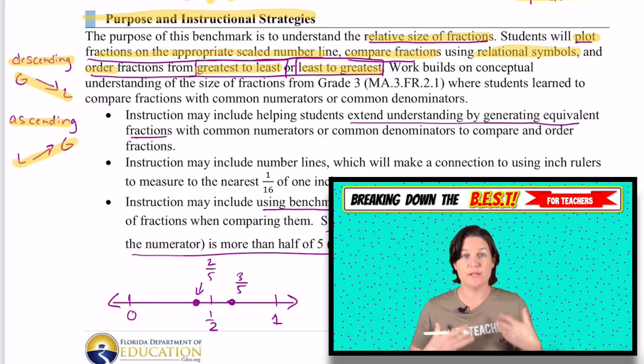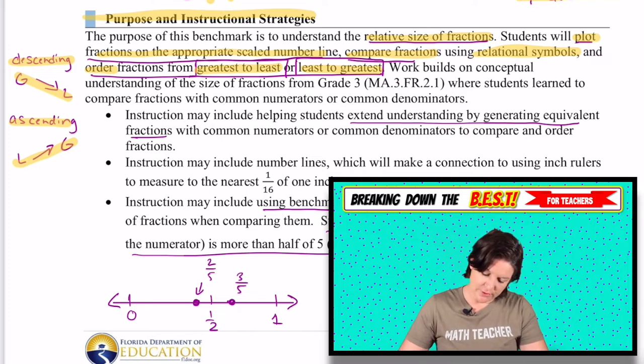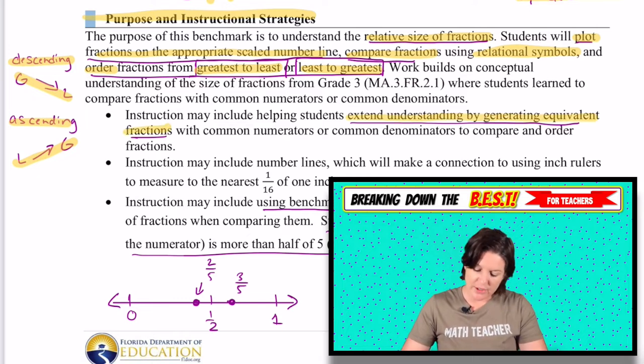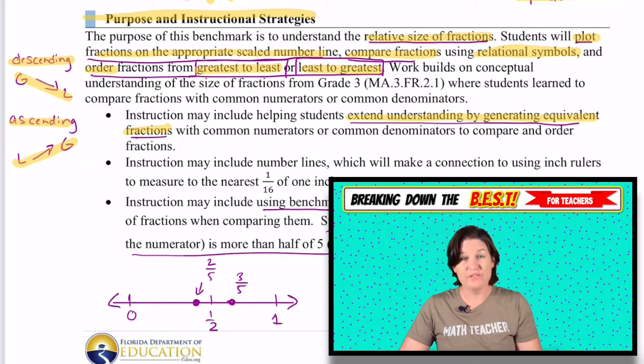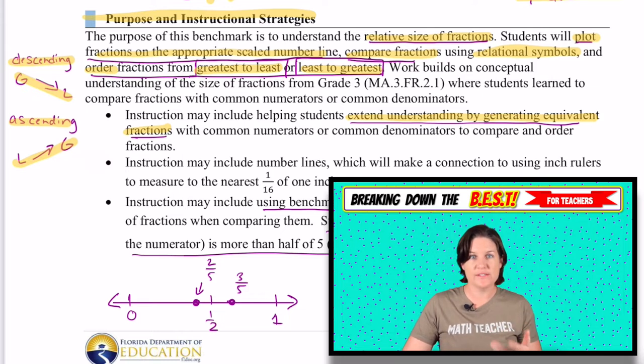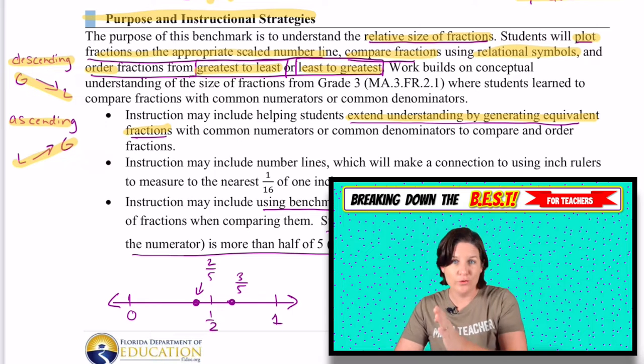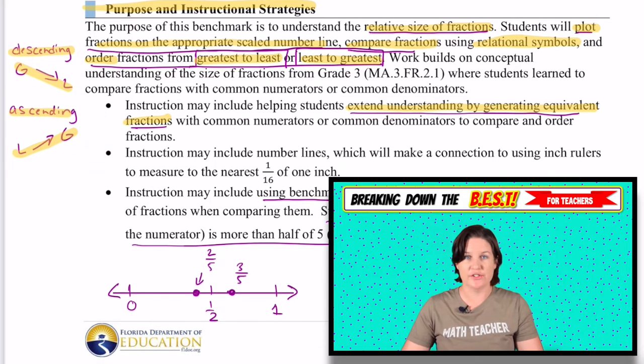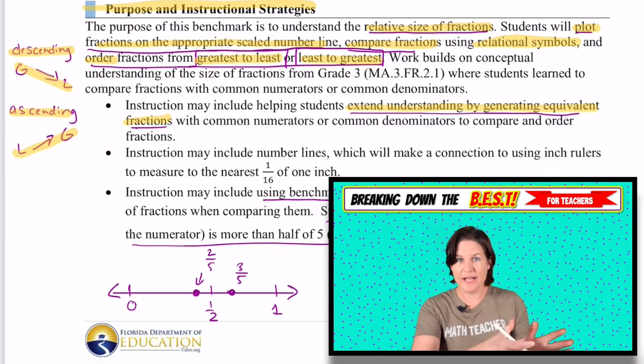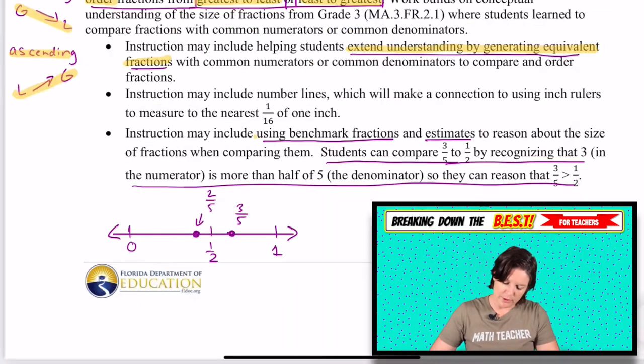In my opinion, I would have students be aware of both. Being able to see the relationship between descending and greatest to least and ascending least to greatest. It says that students' instruction may include helping students extend understanding beyond generating equivalent fractions. So in the video lessons, we do point out equivalent fractions in this. It's helpful to say, okay, well, I know that three, six or five tenths is equivalent to one half. So that means six tenths must be over the halfway mark. So we're extending our understanding with that. We're using that understanding we had and applying it to this setting as well. We'll be using benchmark fractions and estimates to reason the size.